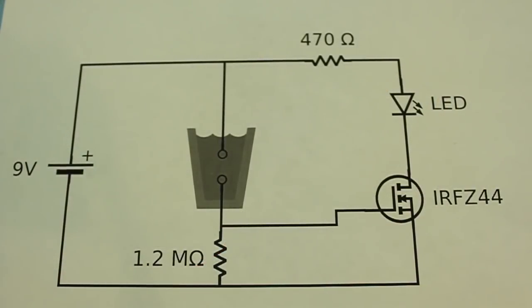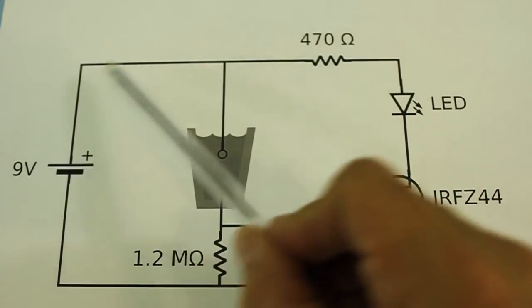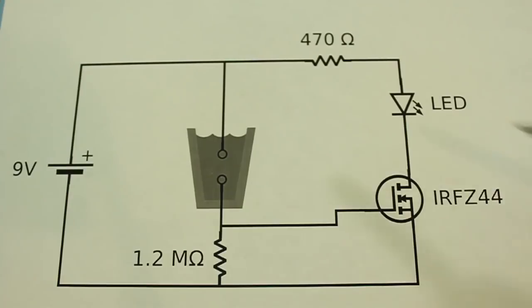This is the schematic. It works with a MOSFET transistor. Here we have the LED with its limiting resistor connected to the positive of the power supply, but the circuit cannot be completed because the MOSFET does not conduct the electricity.